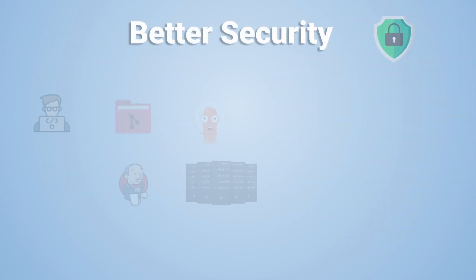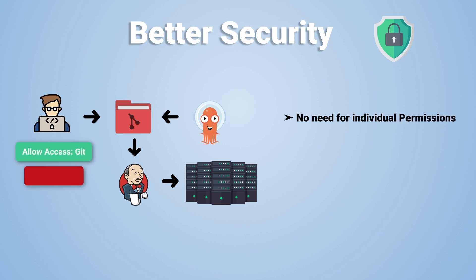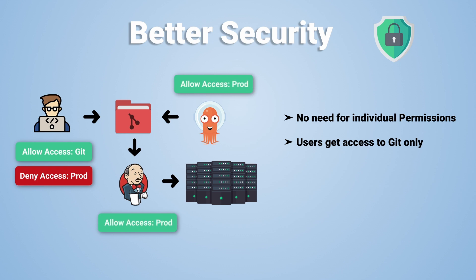The third reason has to do with security. Remember the example with the engineer applying the changes manually? With GitOps, you don't need to give individual engineers permissions to issue changes directly to the infrastructure. Instead, you only give them access to changing what's in Git. You then give your CI solution or your Git operator the permissions required to make the changes in production. Having a GitOps operator make the changes to your environments is much more secure than giving that access to a human.